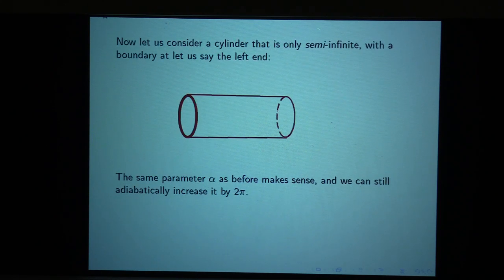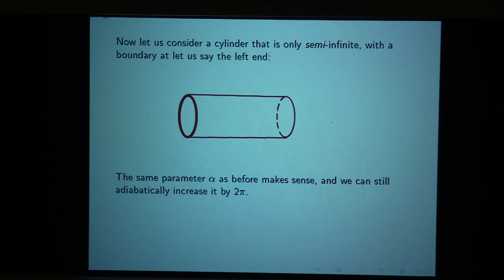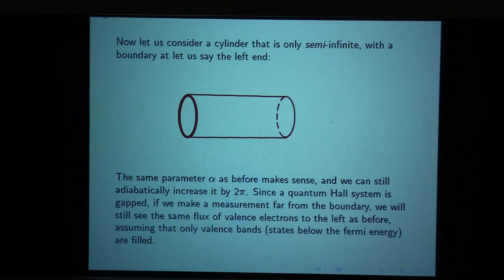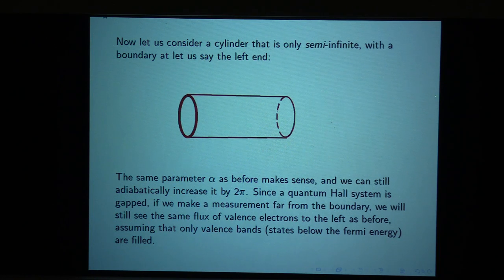Now let's consider a cylinder that's only semi-infinite with a boundary at the left end. The same parameter alpha makes sense, and we can still adiabatically increase it by 2 pi. It makes sense to assume that far away to the right, the system returns to its original state. And since the quantum Hall system is gapped, a measurement way down here will show the same current flowing to the left as in the infinite system — each electron goes k steps to the left when alpha increases by 2 pi.